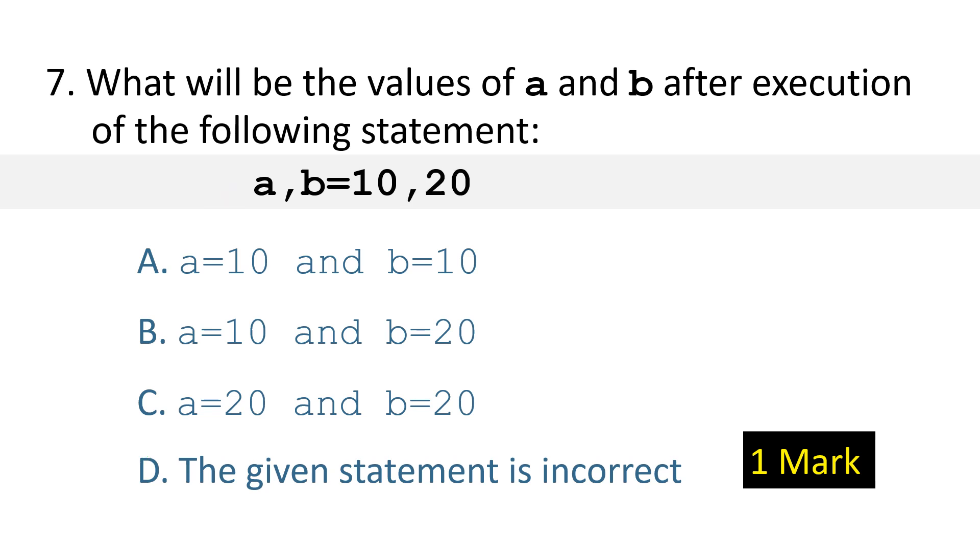Question number 7. Say the given statement and find what will be the values of A and B after its execution. And the answer is option B. A will be 10, B will be 20.